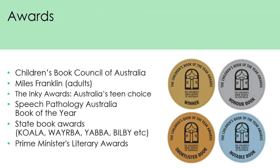Book awards are another really useful tool for identifying materials for collections. In Australia, some important ones include the Children's Book Council of Australia Book of the Year Awards and the Miles Franklin Awards. For school libraries, the Inkey Awards, the Speech Pathology Australia Book of the Year, State Book Awards, and the Prime Minister's Literary Awards might also be useful.